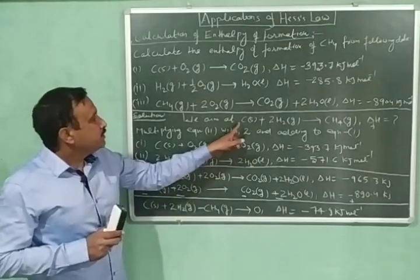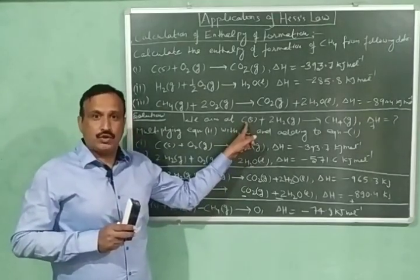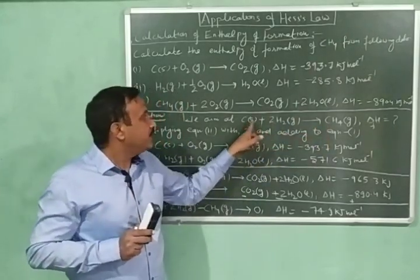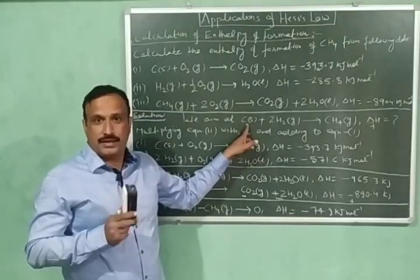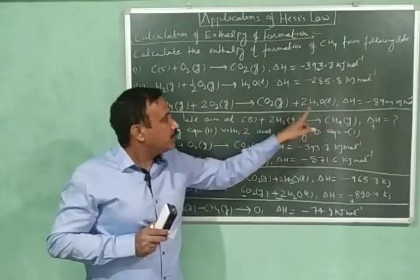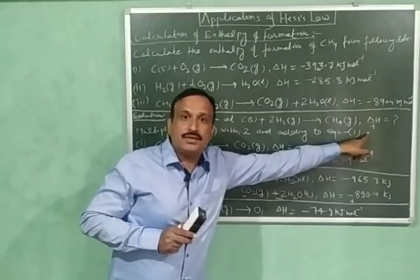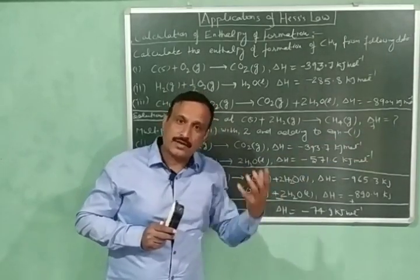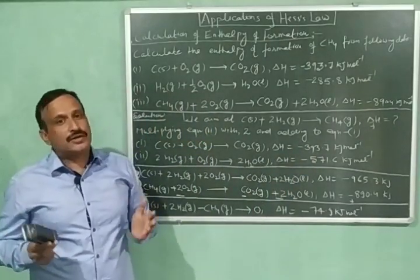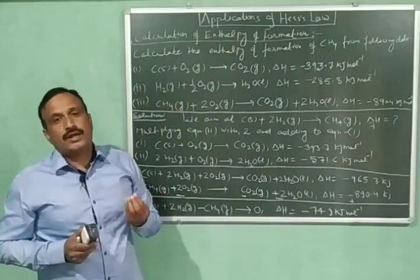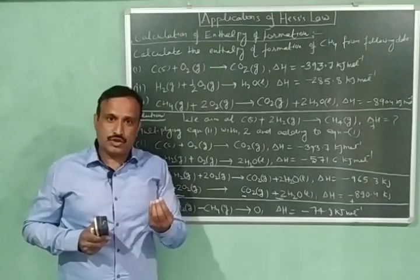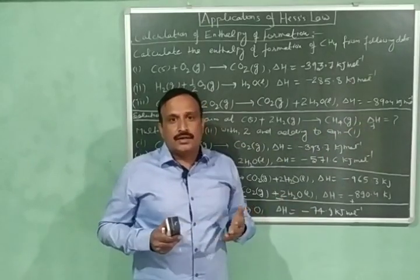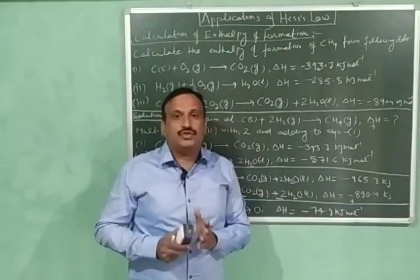This is the desired equation, because it involves the formation of one mole of methane from its elements — carbon and hydrogen — and the heat change during this reaction will be the enthalpy of formation of methane. If the reactants and the products are present in their standard state — that is, at 298.15 K and one atmospheric pressure — then this enthalpy change will be called the standard enthalpy of formation of methane.